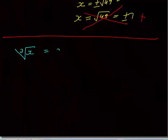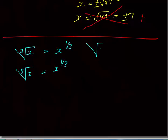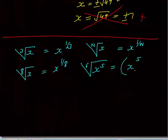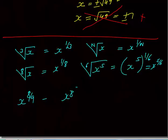Now, if the nth root of x is written, it means x raised to power 1 by n. For example, the cube root of x means x raised to power 1 by 3, and the 8th root of x means x raised to power 1 by 8. Furthermore, the 6th root of x raised to power 5 means x raised to power 5 by 6. Conversely, if you want to write x raised to power 8 by 9, this can be written as the 9th root of x raised to power 8 — both are the same, and you must know how to write it both ways.